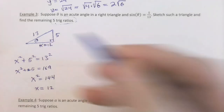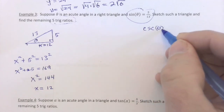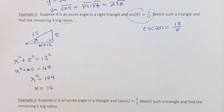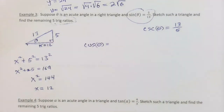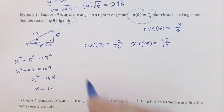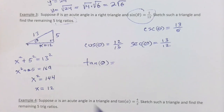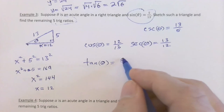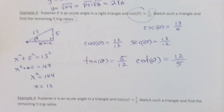So sin(θ) = 5/13, meaning csc(θ) = 13/5. Cosine is adjacent over hypotenuse, so cos(θ) = 12/13, and sec(θ) = 13/12. Tangent doesn't involve the hypotenuse — it's opposite over adjacent — so tan(θ) = 5/12, and cot(θ) = 12/5. That concludes example three.